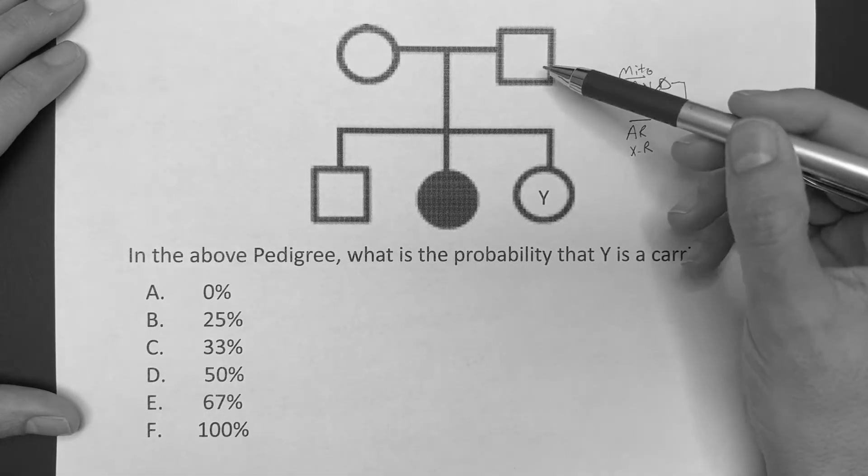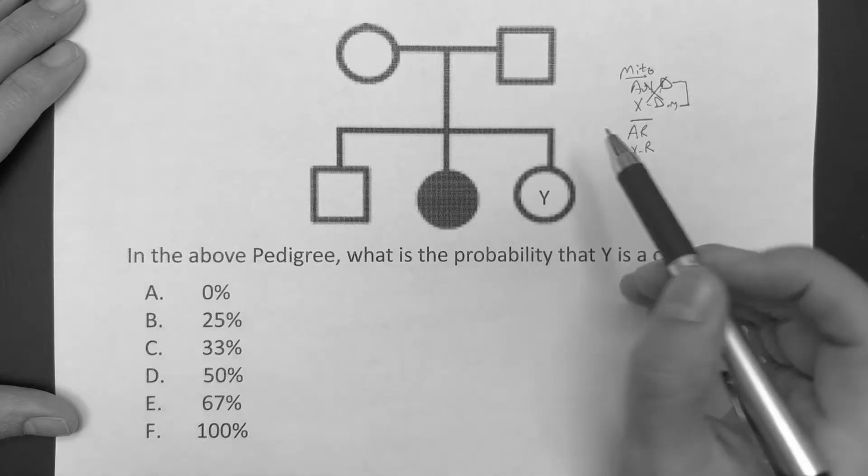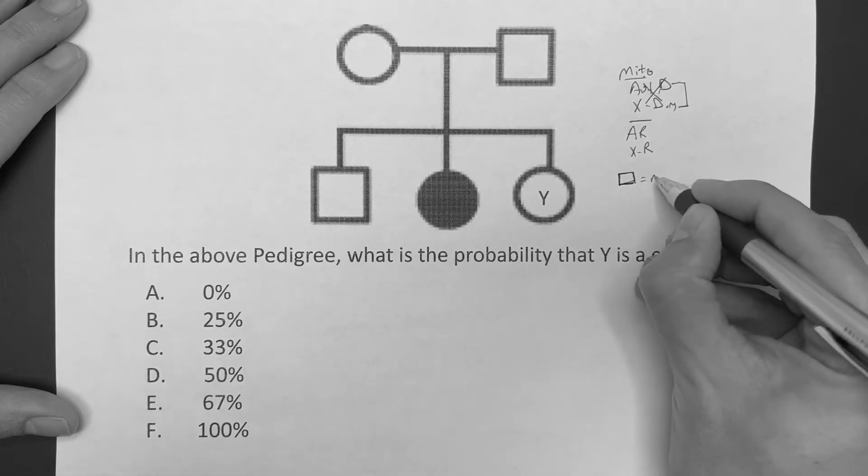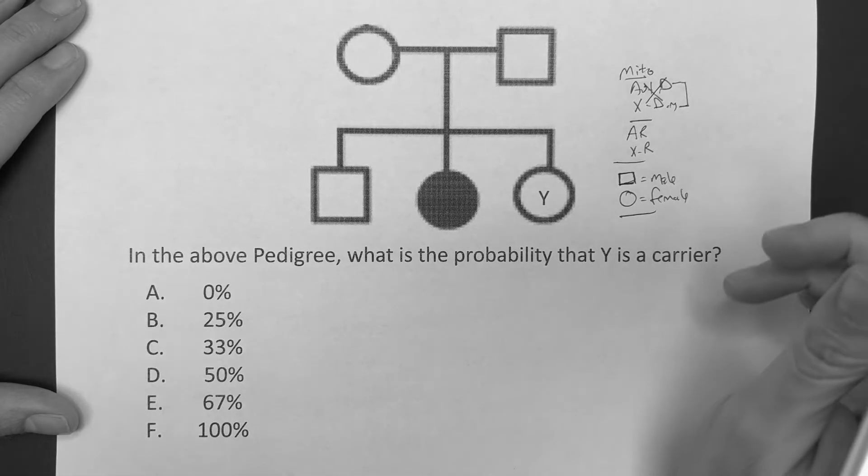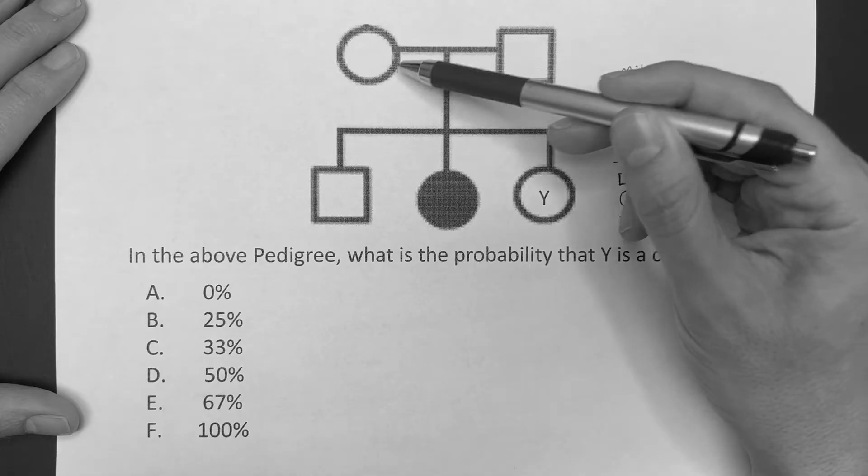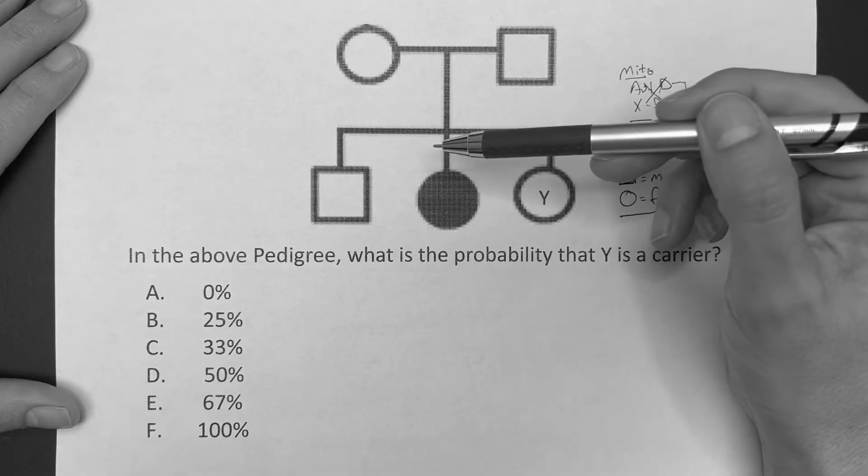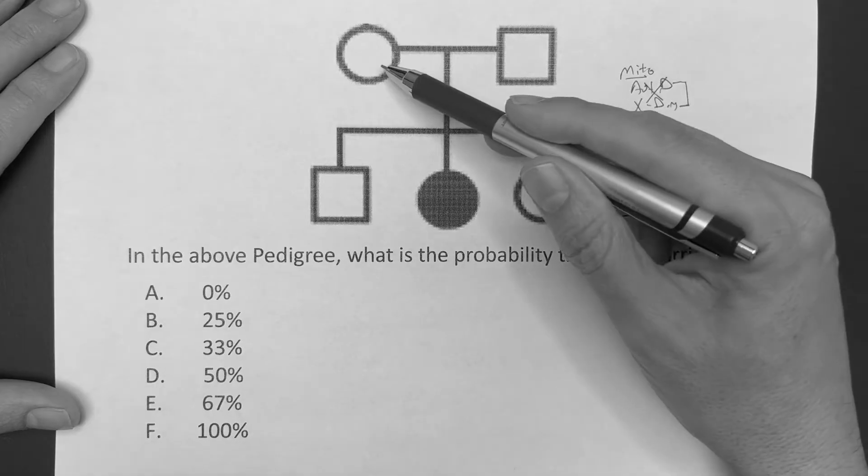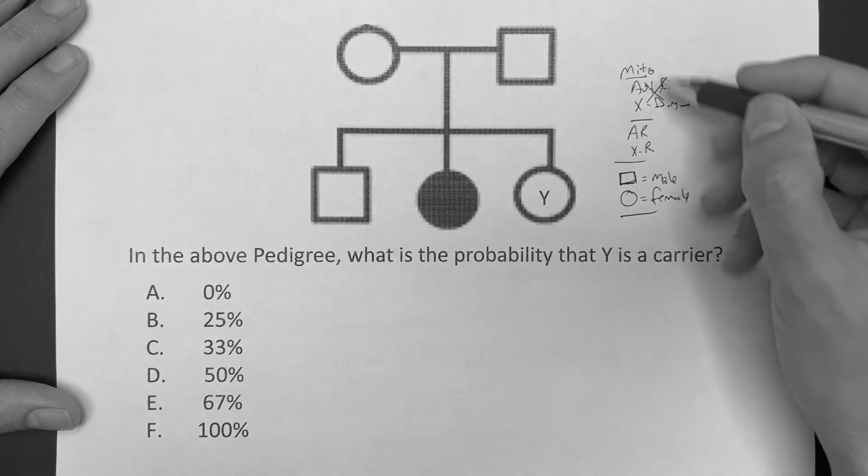So we're left with autosomal recessive or X-linked recessive. First of all, when you see these, you need to know is the circle a male, is the square a male? Because if you don't, it can come back to haunt you. You need to know that the square represents a male and the circle represents a female. The mom is negative, or at least the mom doesn't phenotypically express herself with this, but one of their children does. Obviously mom's a carrier if we're going through recessive route. Let's eliminate some of these choices.